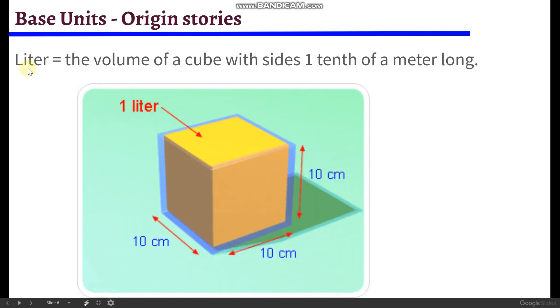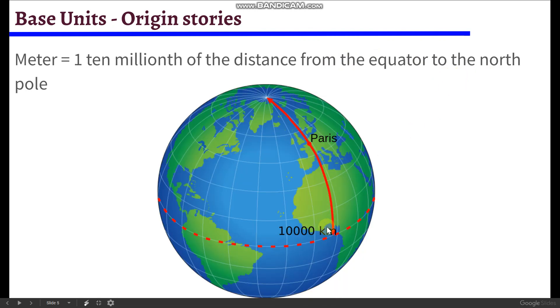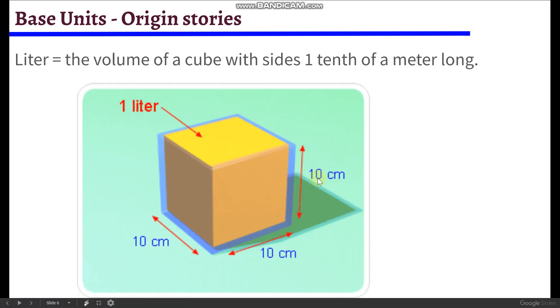All right, next up is a liter. A liter is the volume of a cube with sides one-tenth of a meter long. So remember that a meter, that's one ten millionth of the way from the equator to the north pole. And so then if you take that distance, and then you cut it into tenths, and then you make a cube with side lengths of those distance, you've got yourself a liter, and that's the base unit for volume.